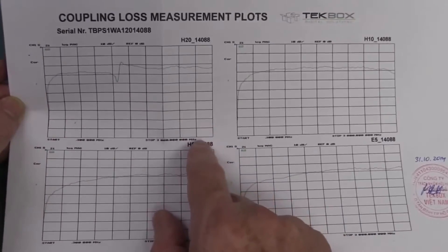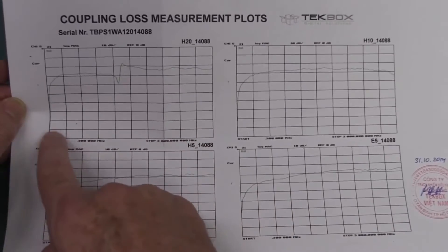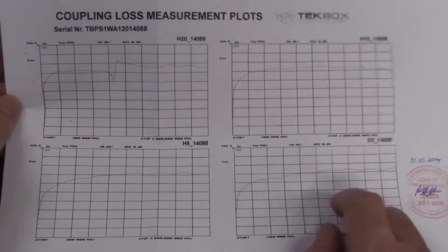So the three H-field probes over the full frequency range, 300k to 3 gig, and our E-field one as well.